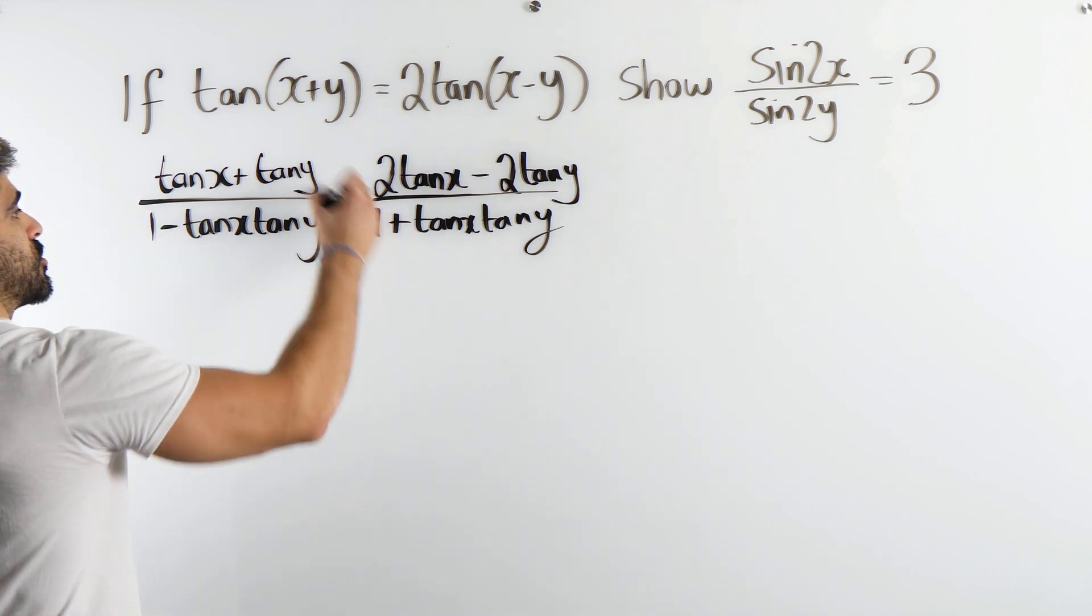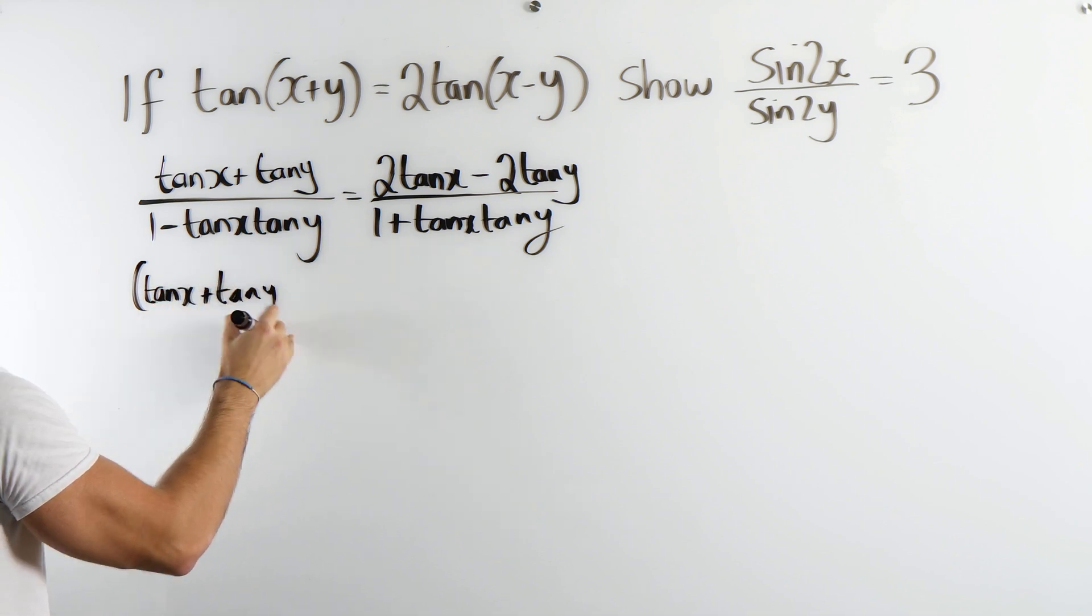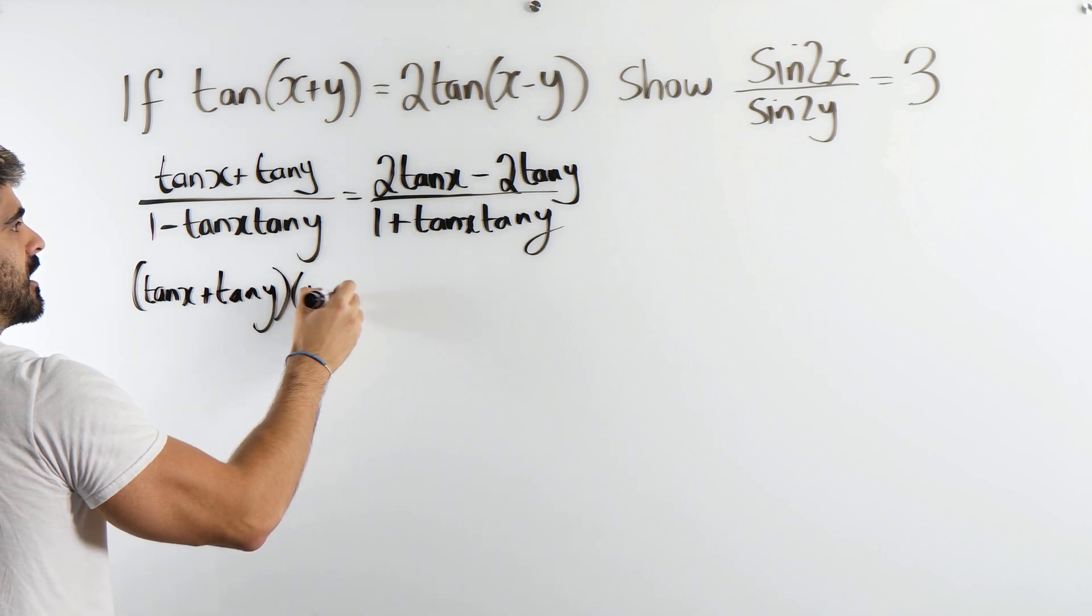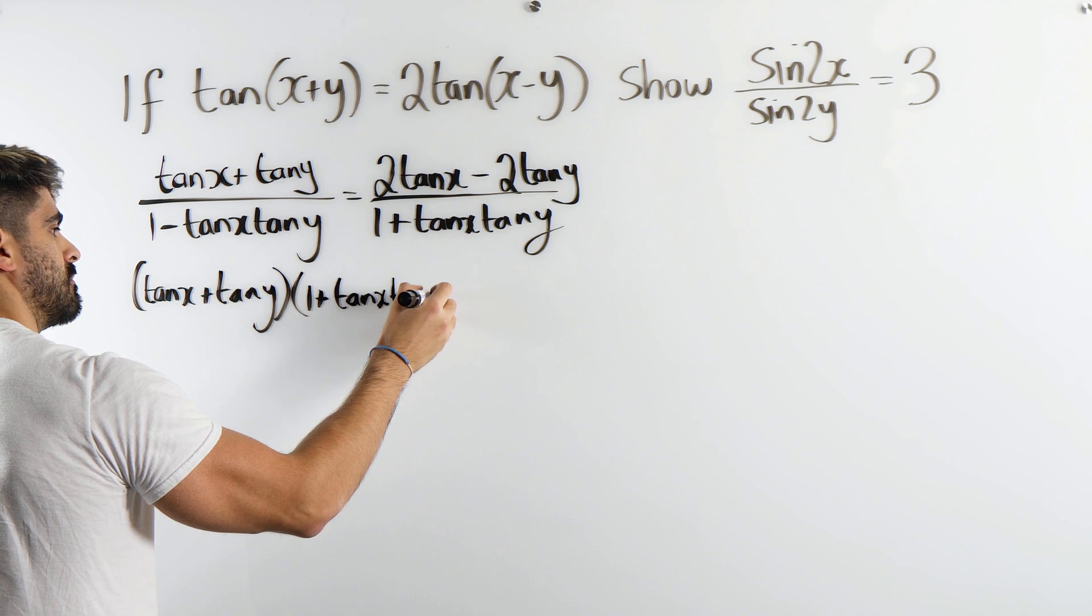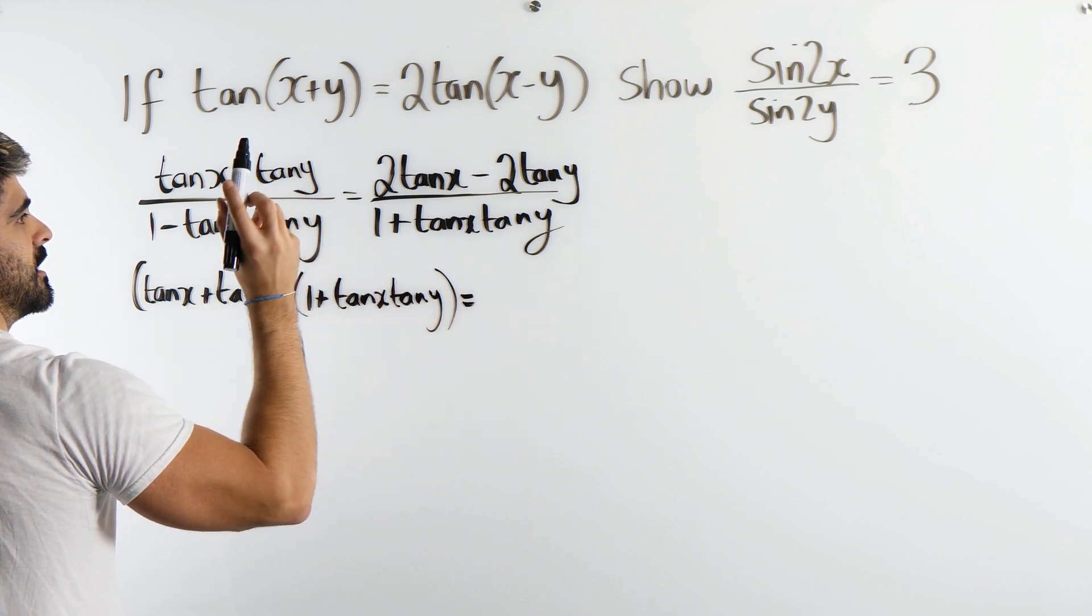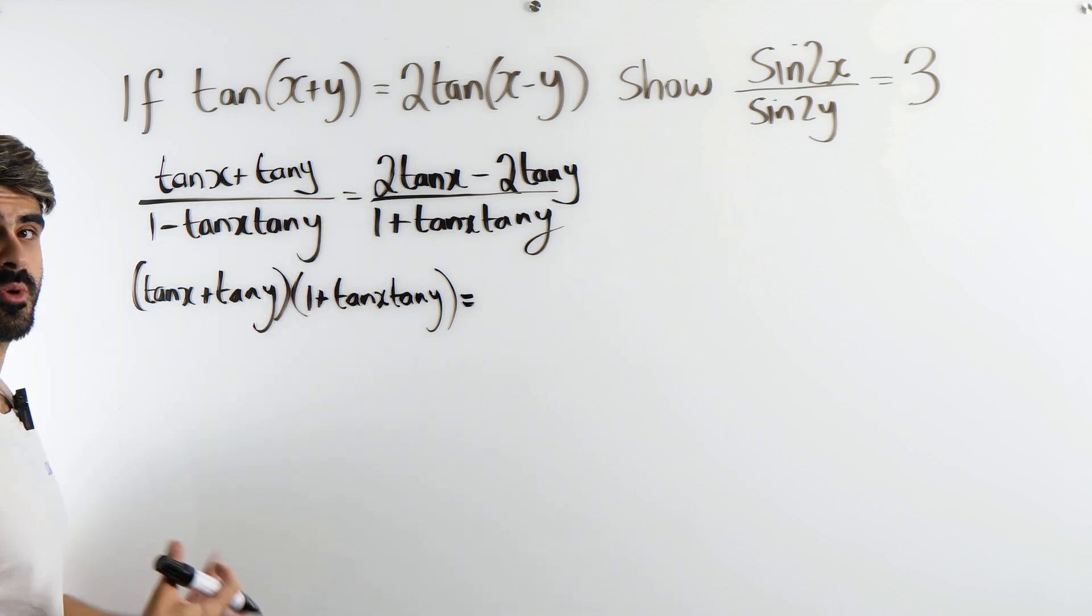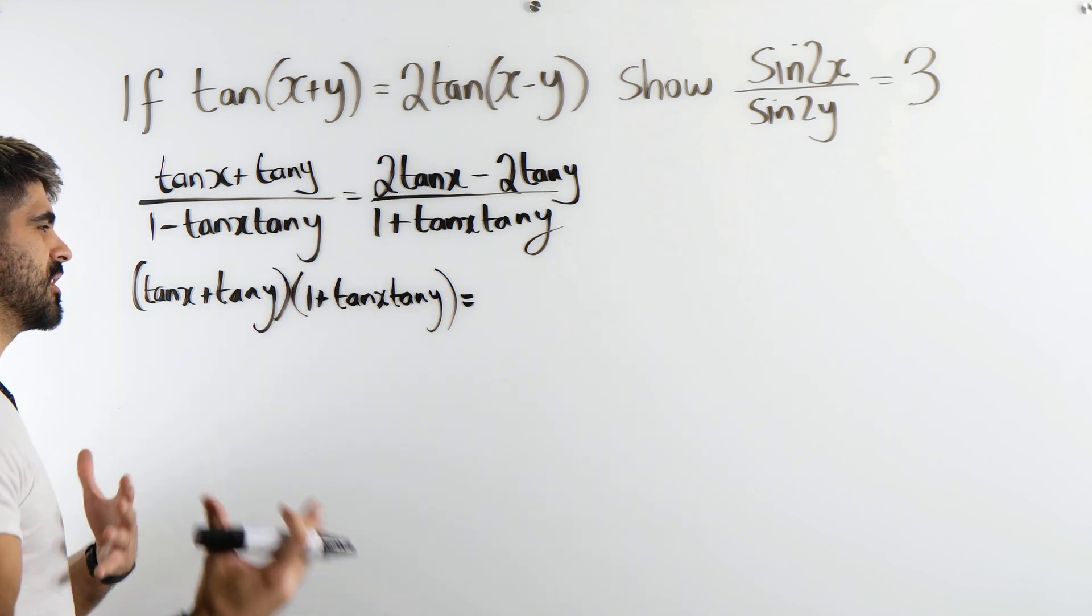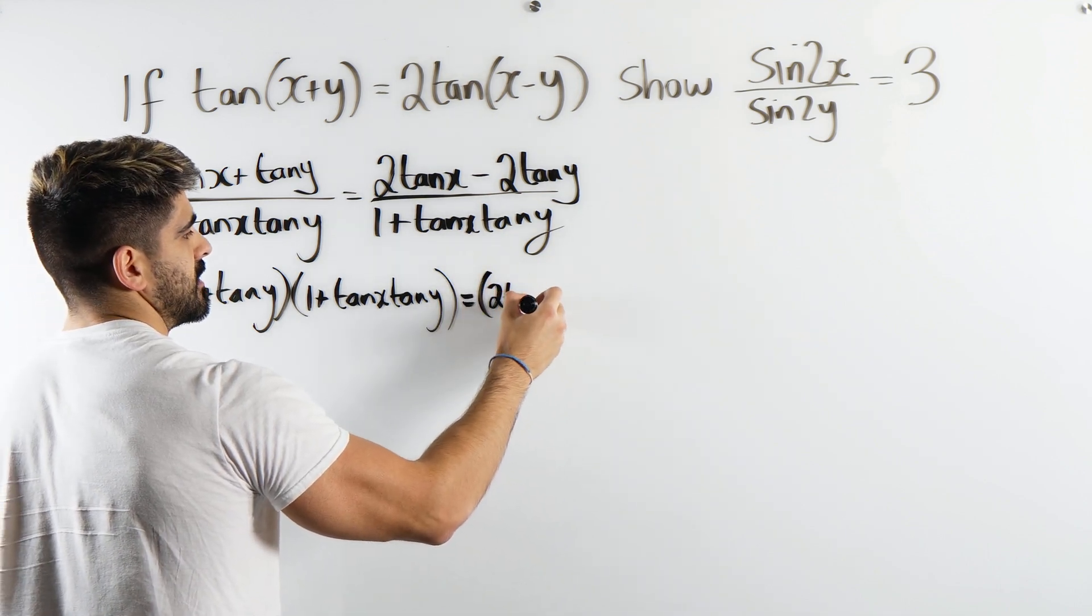Okay, so cross multiply, we're going to have tan x plus tan y times 1 plus tan x tan y, yes that's these two multiplied together, equals this. You might say maybe keeping the two outside would have been nicer, but you're going to have to multiply the two in anyway, so it doesn't really make a difference.